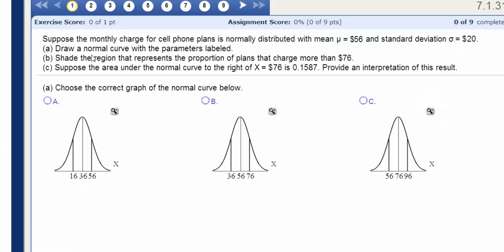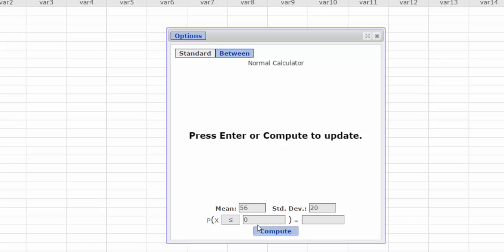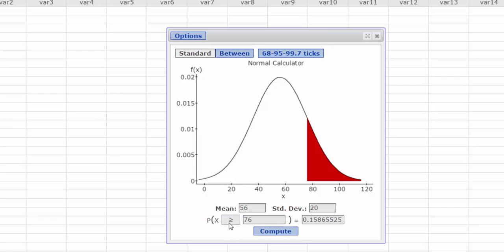And I think at some point, we're asked to shade the region that represents the portion of plans that charge more than $76. So I'm going to enter $76 down here and then change the direction of the inequality sign. That will give me more than $76. I press Compute, and this is the area under the curve to the right of $76.